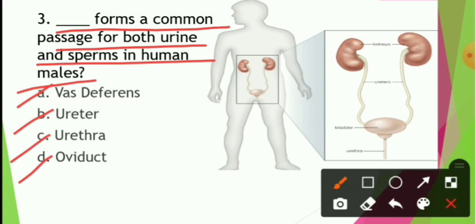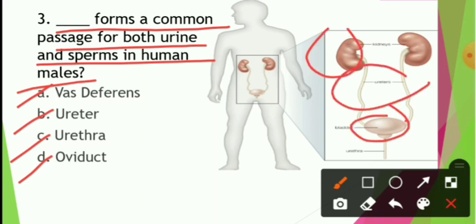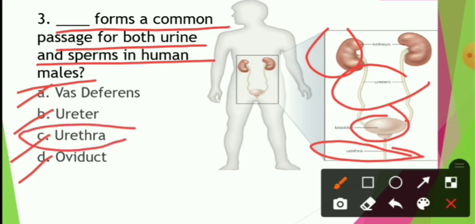Next question: What connects the kidney and bladder in the urinary system? Urethra is a common passage through which both urine and sperm pass. The answer is option C, urethra.